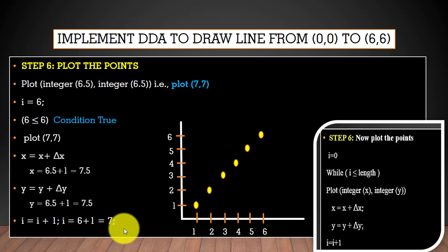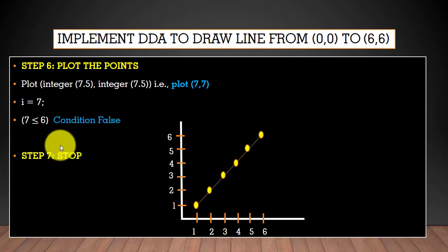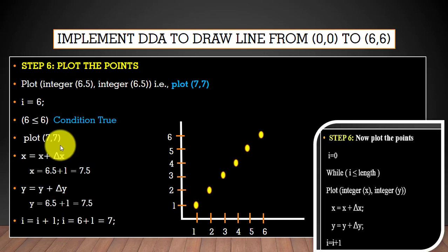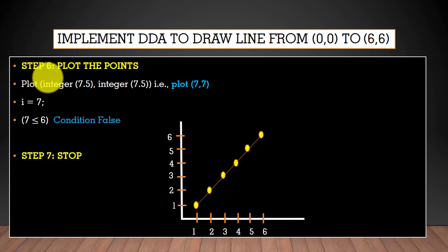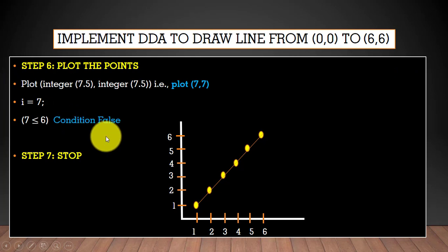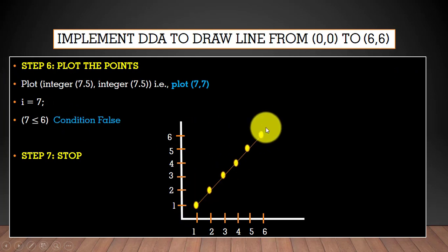As you can see, we also encounter a point such as (0.7, 0.7), which is a drawback of this algorithm — we will discuss that in the next slide. When the value of i reaches 7, the condition becomes false, so we stop. The points generated from (0, 0) to (6, 6) form the line.